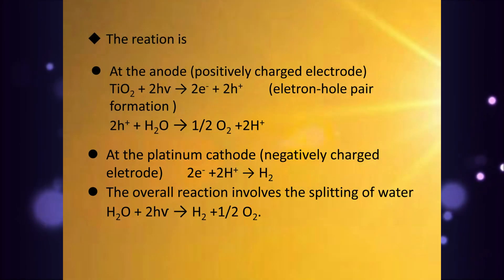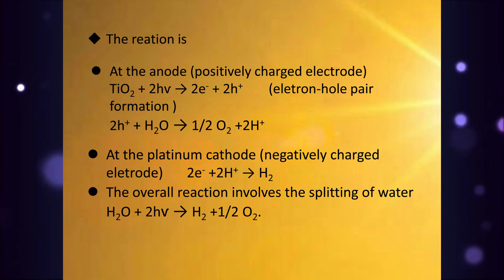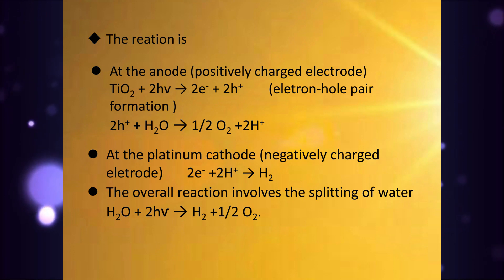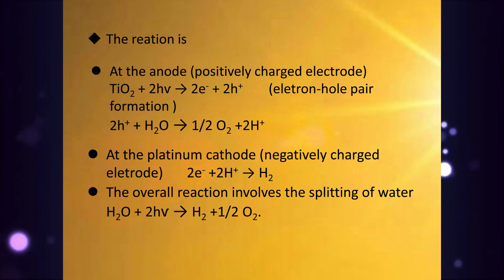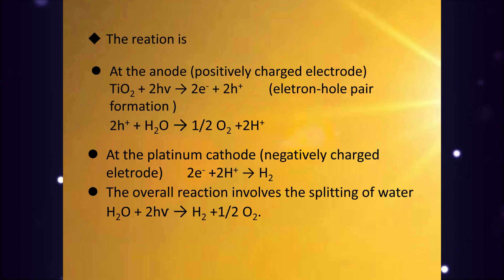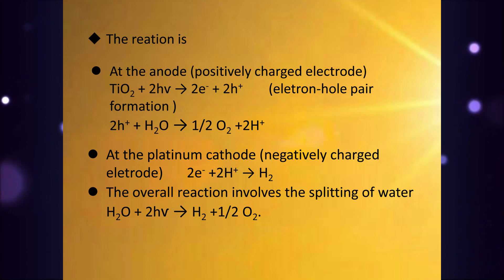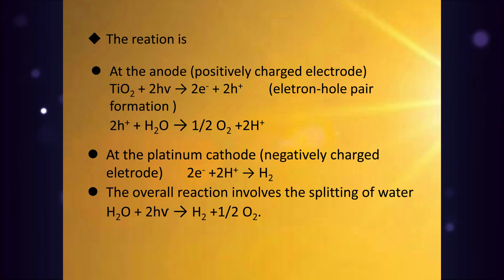The reaction at the anode, the positively charged electrode, involves electron-hole pair formation. At the platinum cathode, the negatively charged electrode, H2 is evolved. The overall reaction involves the splitting or decomposition of water: H2O plus 2hν gives H2 plus half O2.